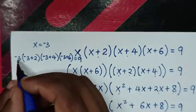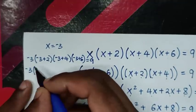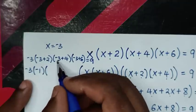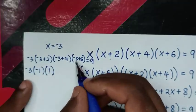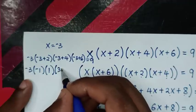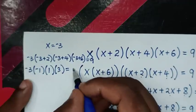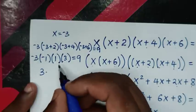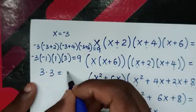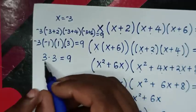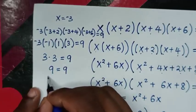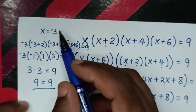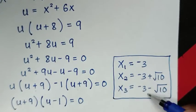Evaluating: −3+2 = −1, −3+4 = 1, −3+6 = 3. So we get (−3)(−1)(1)(3) = 3×3 = 9, which equals the right side. Left side equals right side, confirming x = −3 is correct. The other two solutions are also correct.